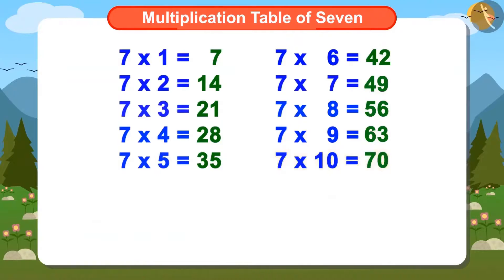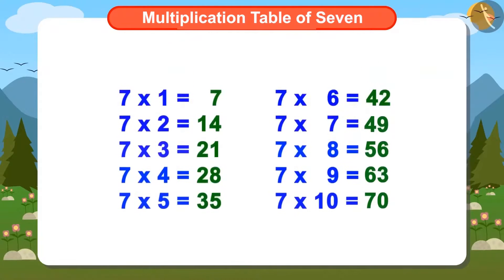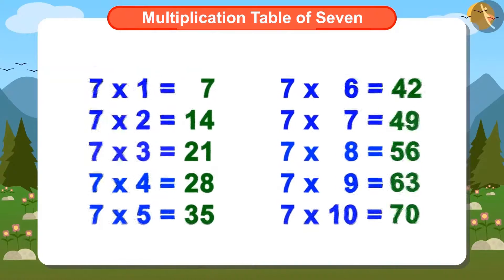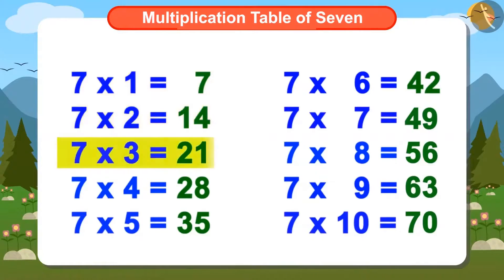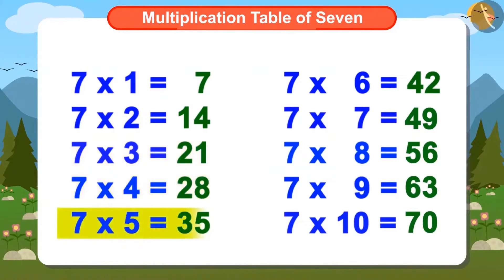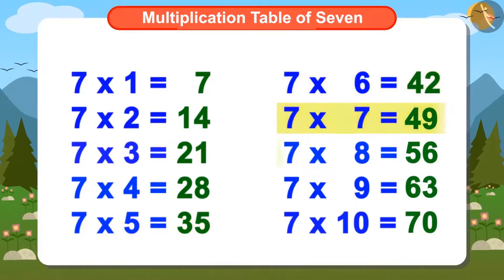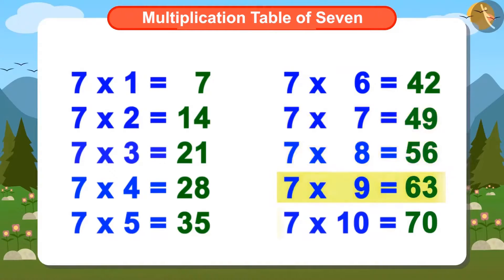To find 7 multiplied by 10, we find the 7th number after 63, which is 70. Now you have written the complete table of 7. Let's memorize it by singing: 7 ones are 7, 7 twos are 14, 7 threes are 21, 7 fours are 28, 7 fives are 35, 7 sixes are 42, 7 sevens are 49, 7 eights are 56, 7 nines are 63, 7 tens are 70.